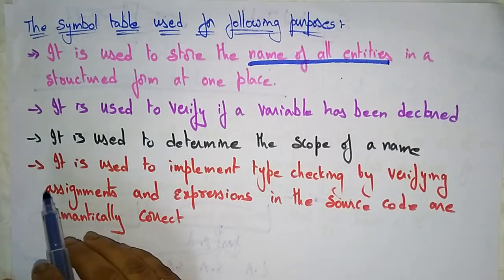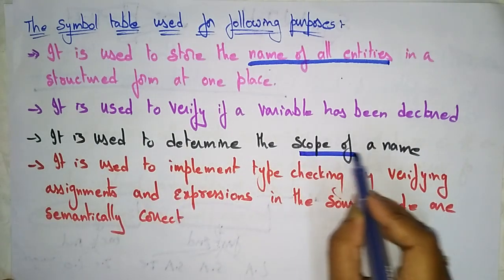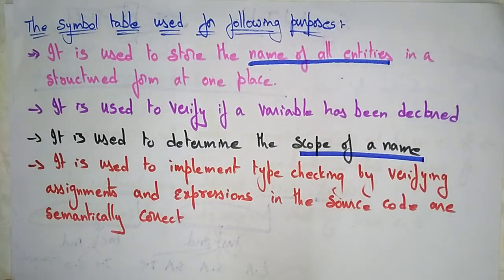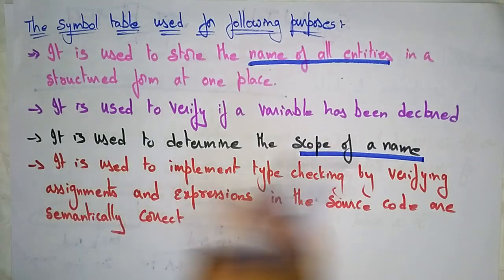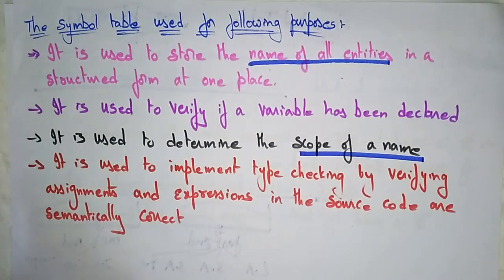Third, the symbol table is used to determine the scope of a name — meaning the lifetime of a variable, whether the variable is declared locally or globally. That scope information is also stored in the symbol table.